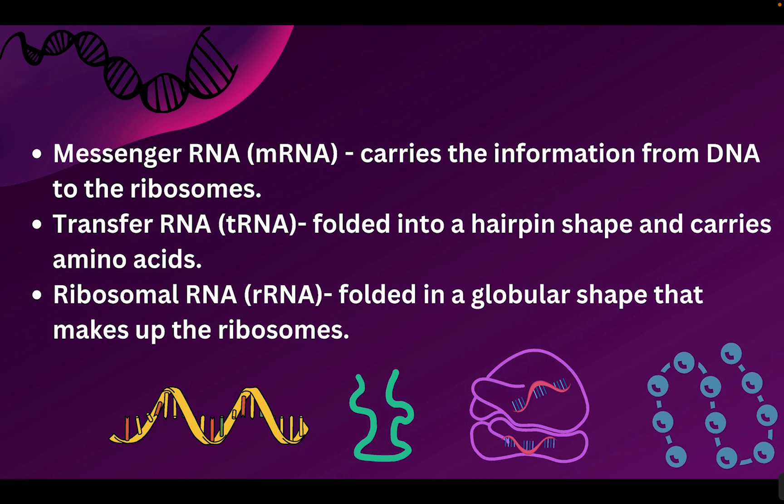The second RNA we need to recognize is called transfer RNA, abbreviated tRNA. It's folded into what's called a hairpin shape. I've drawn it here — to me it's always had sort of a trumpet-like shape, but it's called a hairpin shape, and this is what tRNA looks like. It will actually carry the amino acids in its top part, which I'll show you later when we get to the stages of protein synthesis.